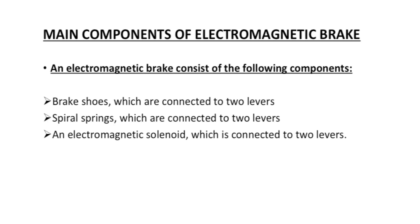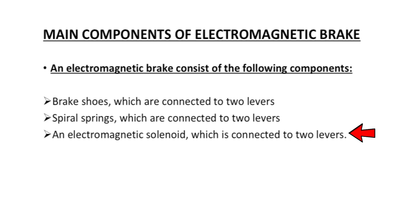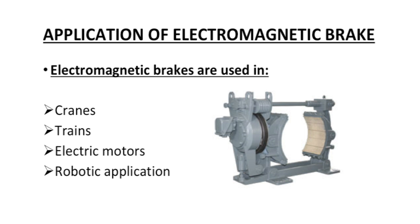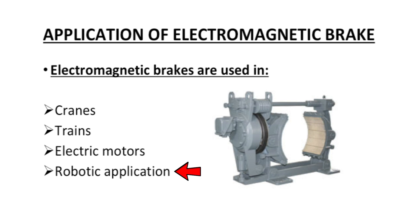Components of electromagnetic brake: it consists of brake shoes which are connected to the levers. Then we have a spiral spring that is connected to two levers, and an electromagnetic solenoid which is also connected to two levers. Applications: this type of brake is used in cranes, trains, electric motors, and robotic applications.